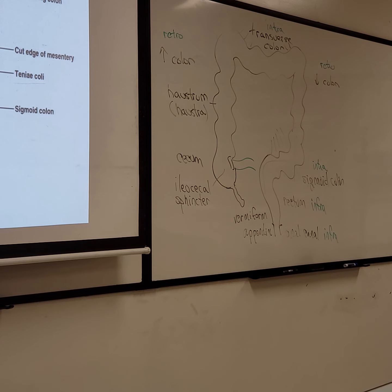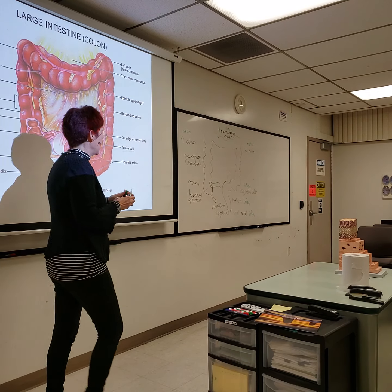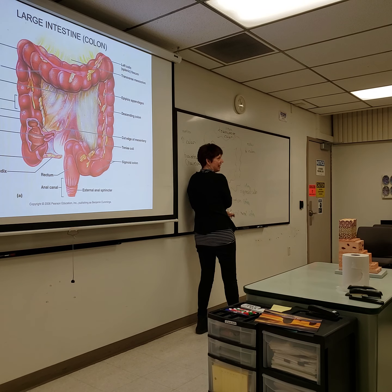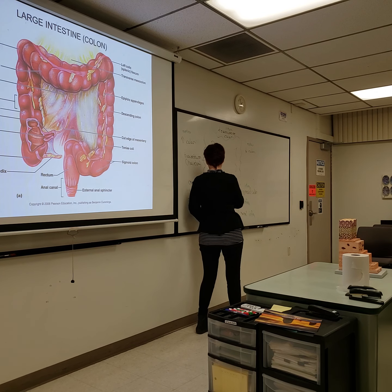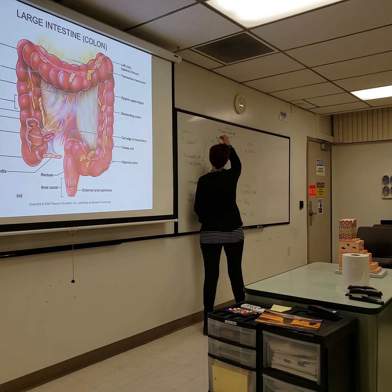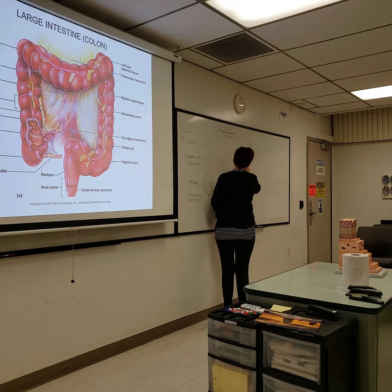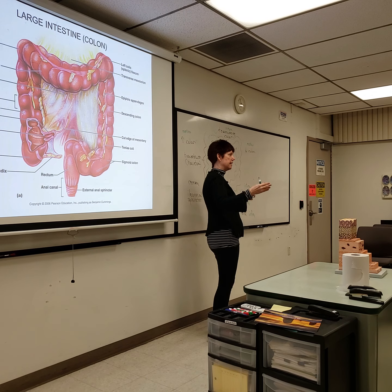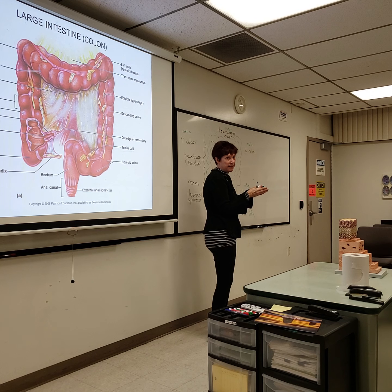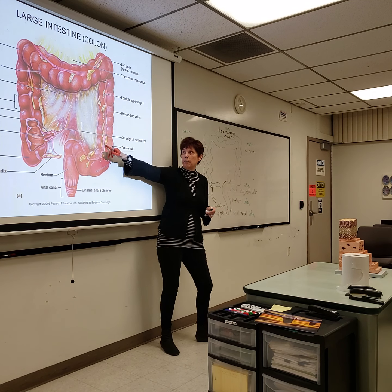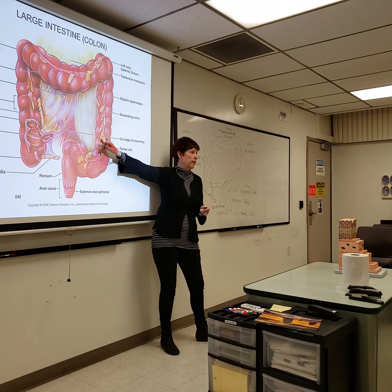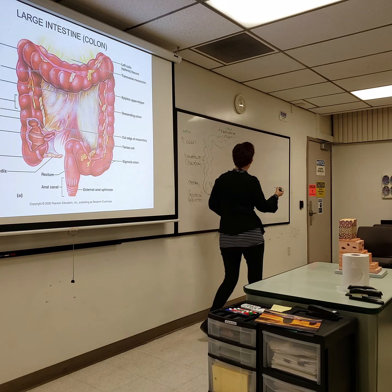You can see the narrow band called the taenia coli — one of three — and on the posterior surface it leads right to the appendix. It is the outer longitudinal muscularis externa layer, which has been limited to these three bands. That's the only external longitudinal muscle layer, and it helps create the haustra pouches.